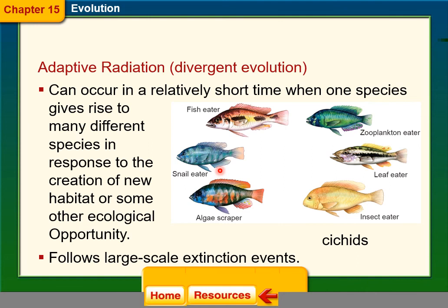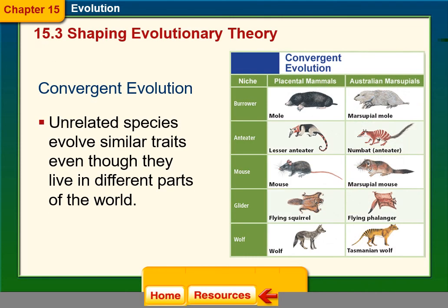The cichlid example is a type of divergent evolution called adaptive radiation. Convergent evolution, by contrast, is when unrelated species evolve similar traits even though they live in different parts of the world — for example, placental mammals and marsupials: a mole and a marsupial mole, an anteater and a numbat, flying squirrels and sugar gliders, wolves and Tasmanian wolves.